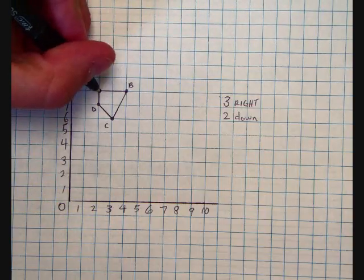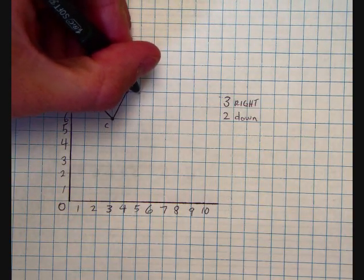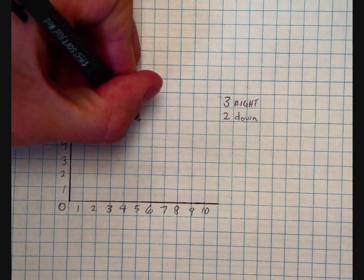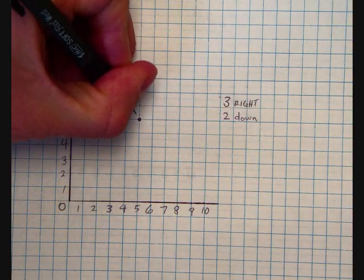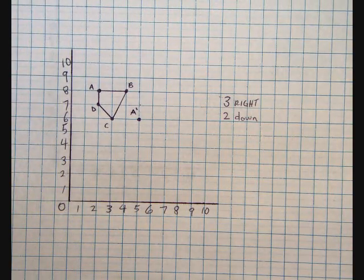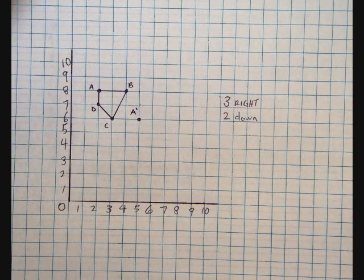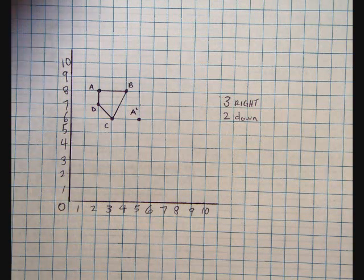For my A point, I'm going to go 1, 2, 3 right, 1, 2 down. And this is going to be my new A point. I'm going to put a little apostrophe beside it and call it A prime. That's to show that it's an image and not the original figure.